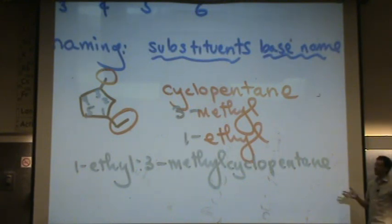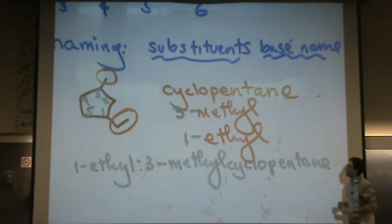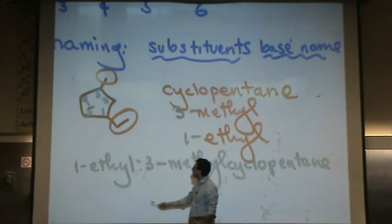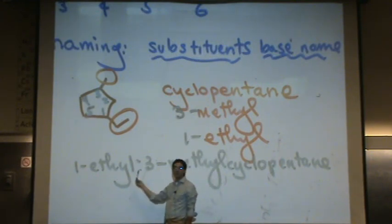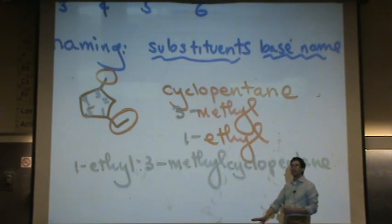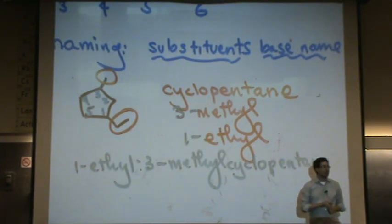Numbering can be kind of funky here. There's a lot more choices where to put the one. But essentially, try to get the lowest number close to the front and number accordingly. Question? I'm sorry, I think I missed - why can't you put the one at the methyl and then go around two, three, so then the methyl would be one and the ethyl would be three? Yeah, another option is 3-ethyl-1-methyl, for example. But I like 1-3 versus 3-1. A slightly lower set of numbers. Having the lowest number first. When you do chains, that's not always possible, but when you do rings, it's possible.